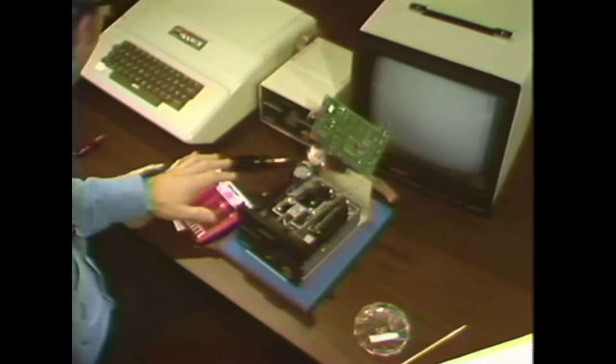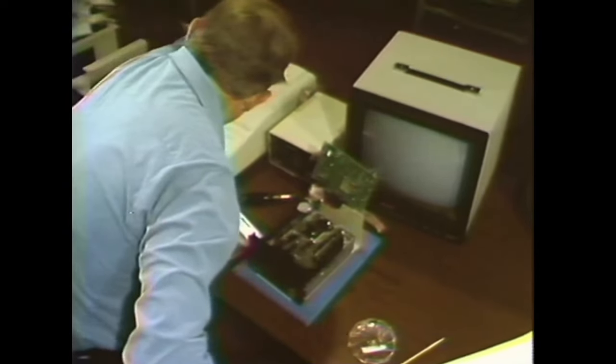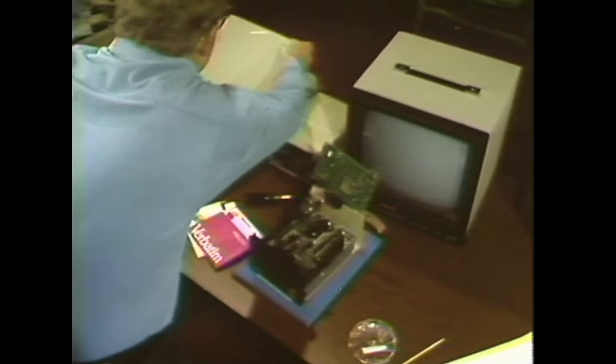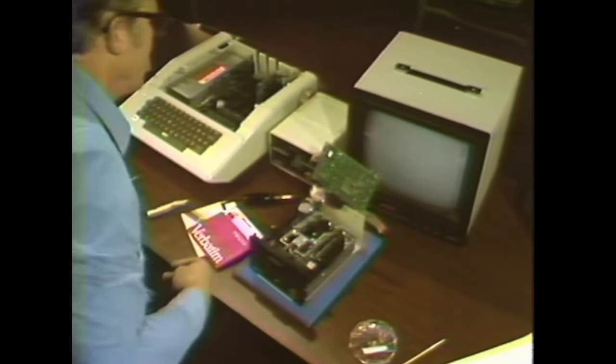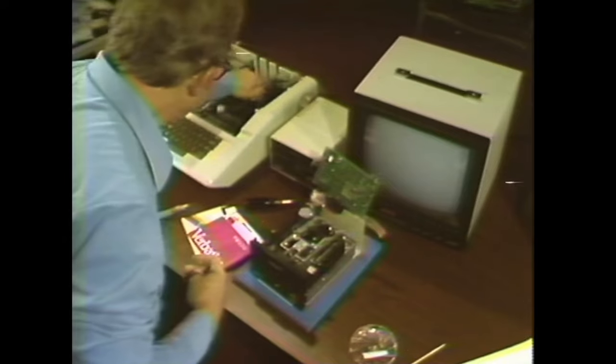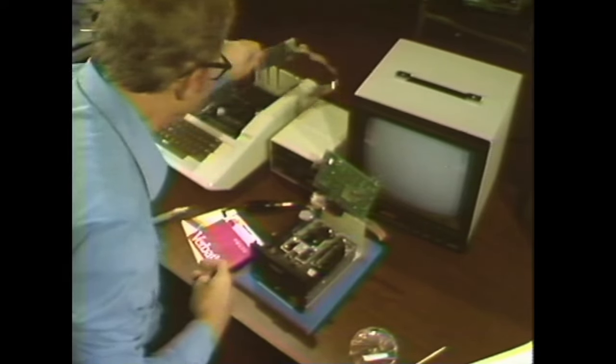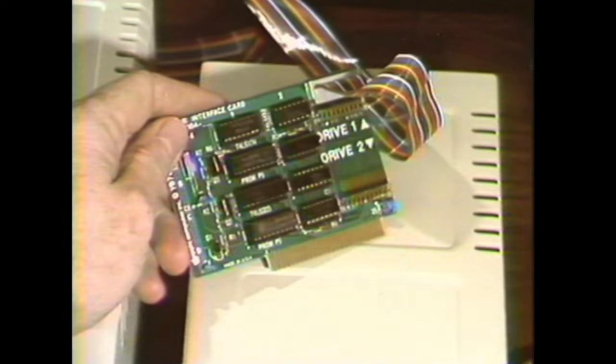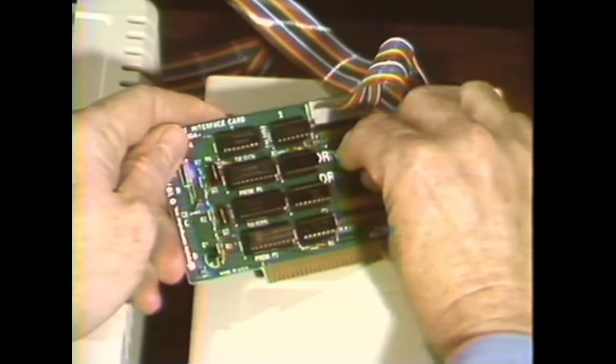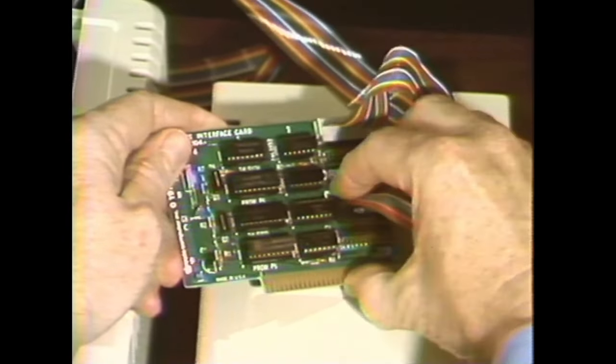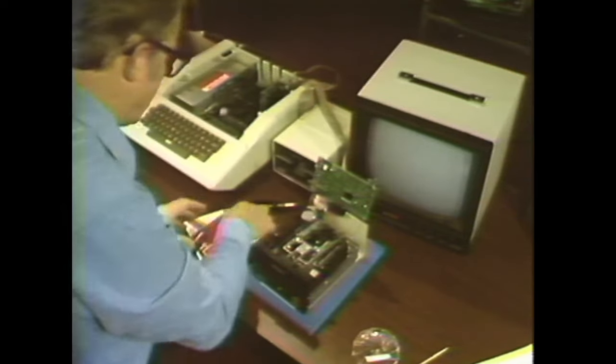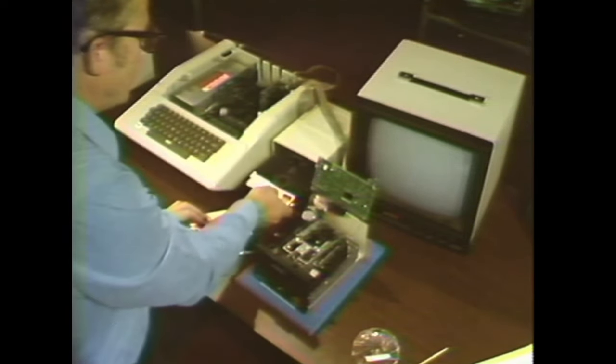Now we're going to use the same setup as before, so I will turn off the power on the Apple, take the lid off, and making sure that I did turn the power off, unplug the interface card and plug the target disk into drive two position and plug it back into slot six.